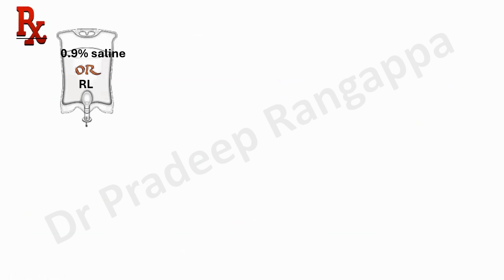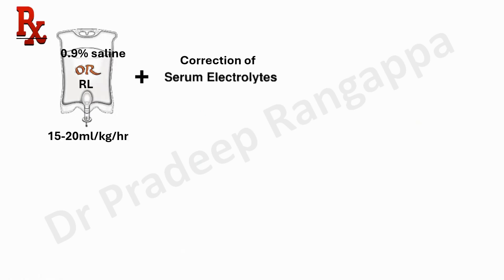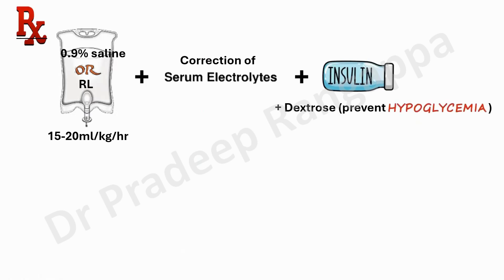Treatment is very similar to DKA. Fluid management involves resuscitation to maintain euvolemia using dynamic measures of fluid responsiveness, starting with 15 to 20 ml/kg. Correction of underlying serum electrolytes is essential. Critically, because blood sugar is low in EDKA due to reduced glucose production and glycosuria, you must give insulin with dextrose to correct the acidosis while preventing hypoglycemia and maintaining sugars around 150 to 200 mg/dL using the dextrose-insulin combination.